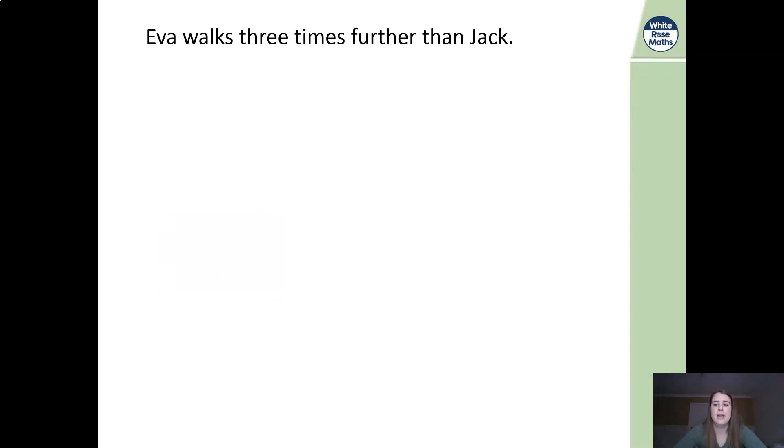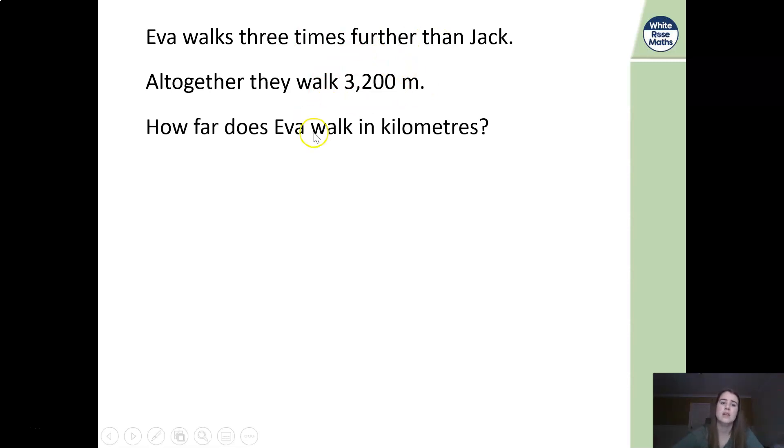Now pay attention to this one. A lot of you lost the marks on this in the test papers that we did last week and I know why. This is where the bar model comes into play and it's really really important that you read the question properly because actually it's a lot easier than I think some of you realize. Eva walks three times further than Jack. That there is a very important number, don't forget it. Altogether they walk 3,200 meters.